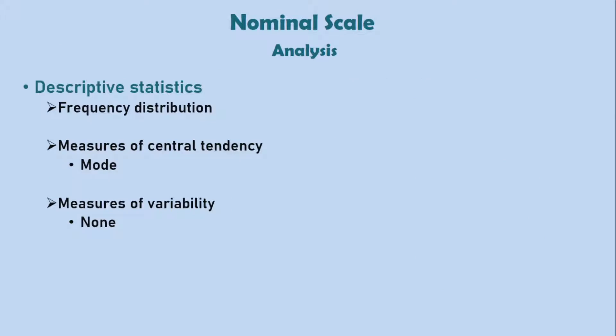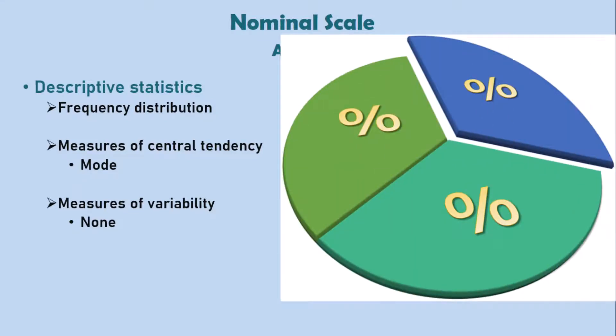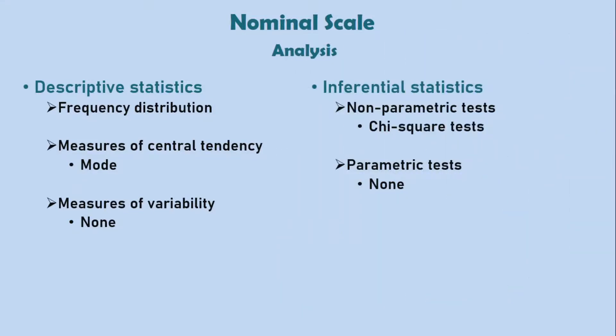Now let's look at some statistical analysis that can be performed for variables measured on the nominal scale. We can describe the data with frequencies and mode and present such results on charts and tables such as this one. We can also conduct a non-parametric test such as chi-square test of independence or goodness of fit on nominal data or nominal scale. But we cannot conduct any parametric test on a nominal scale.